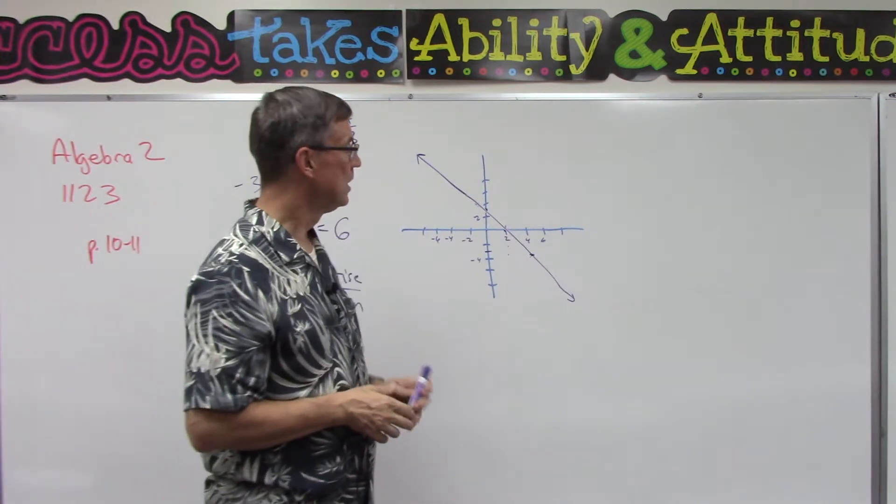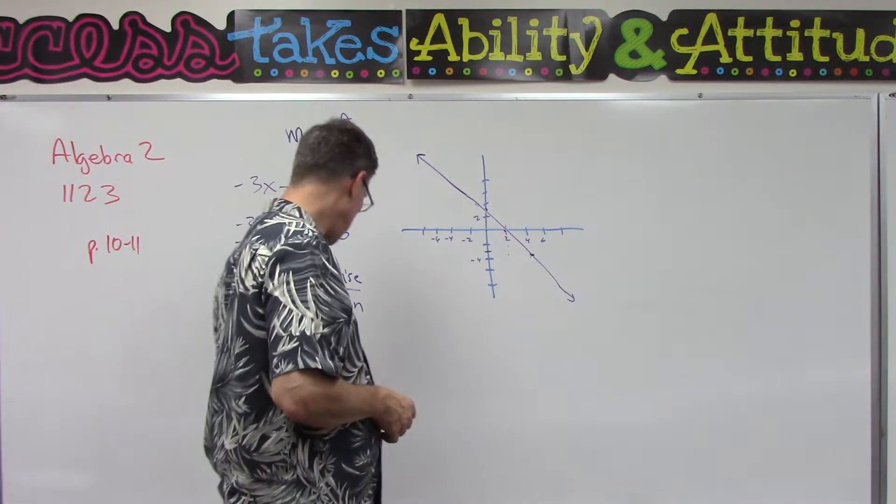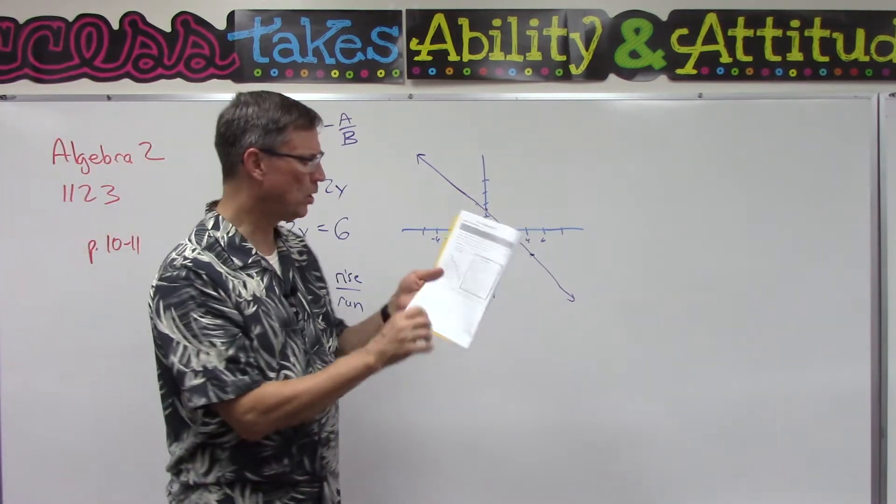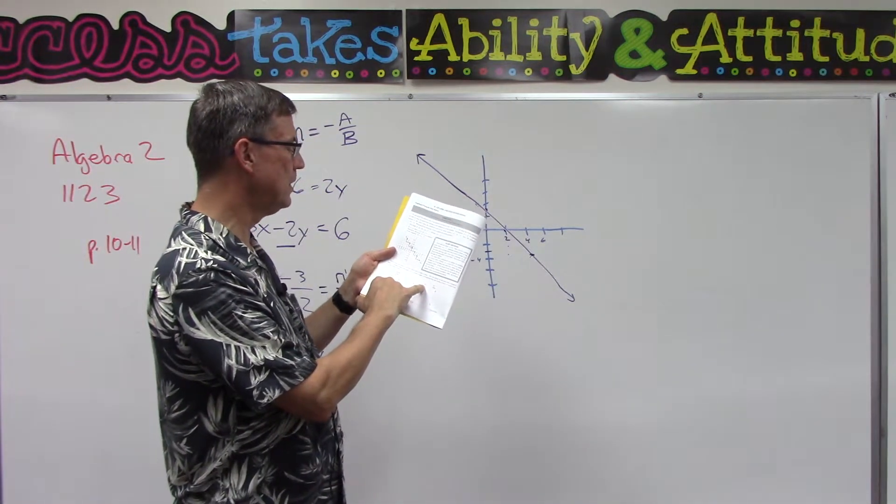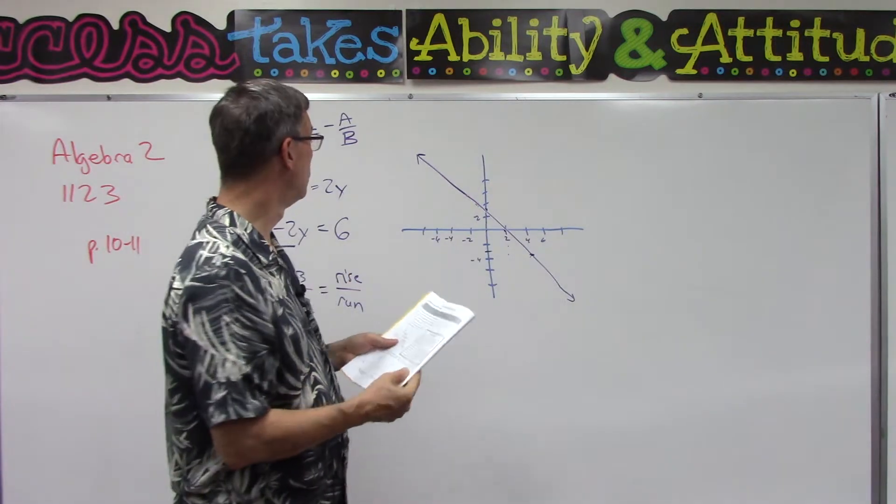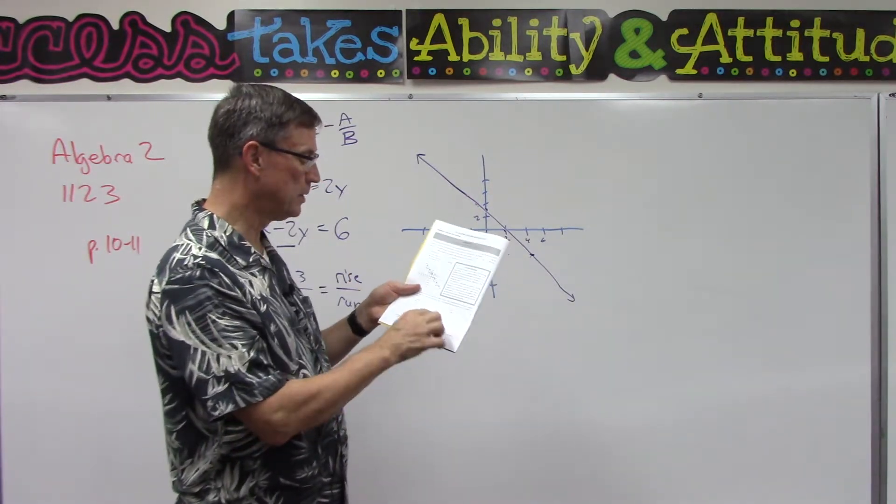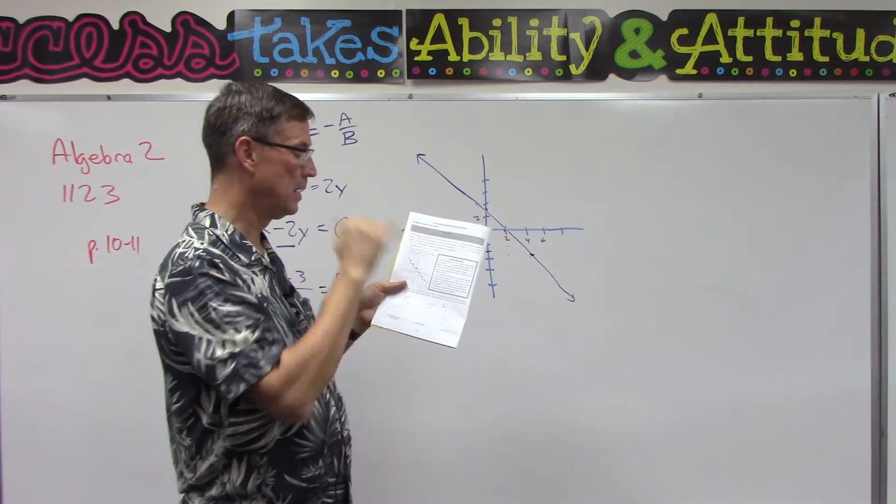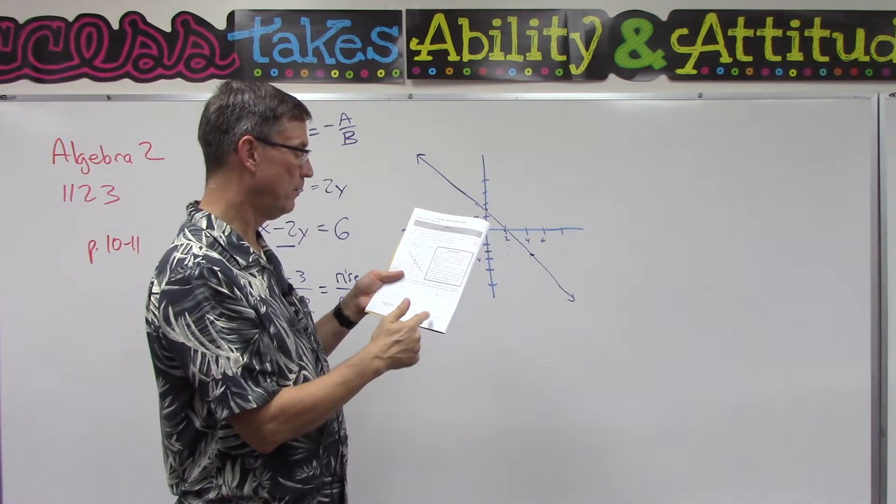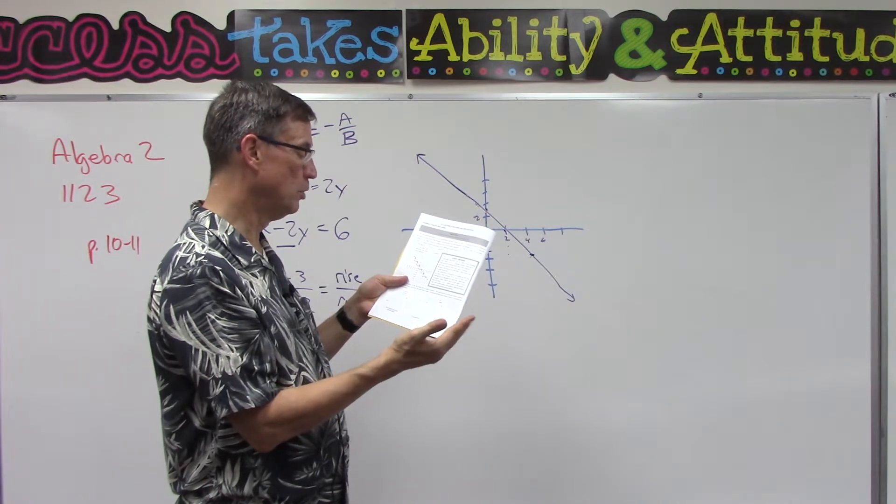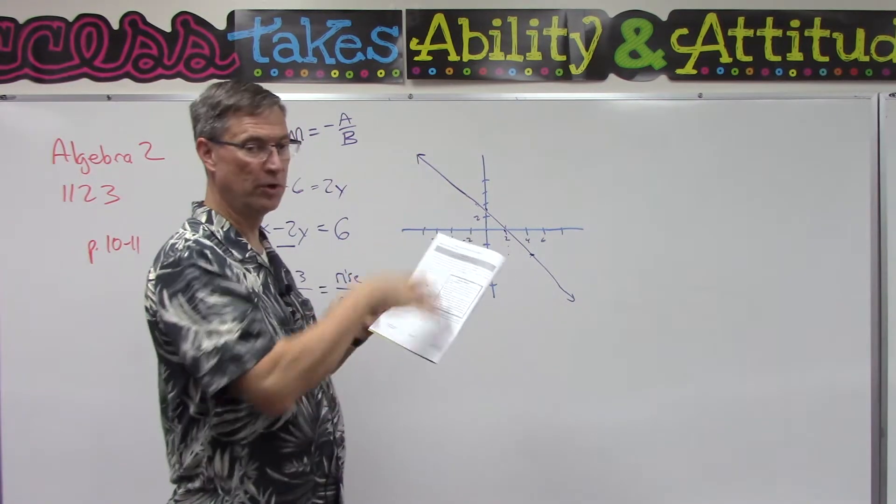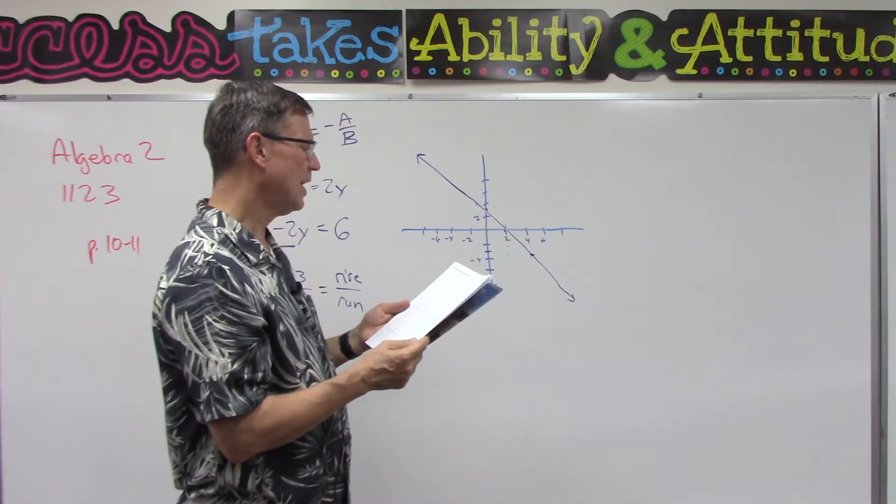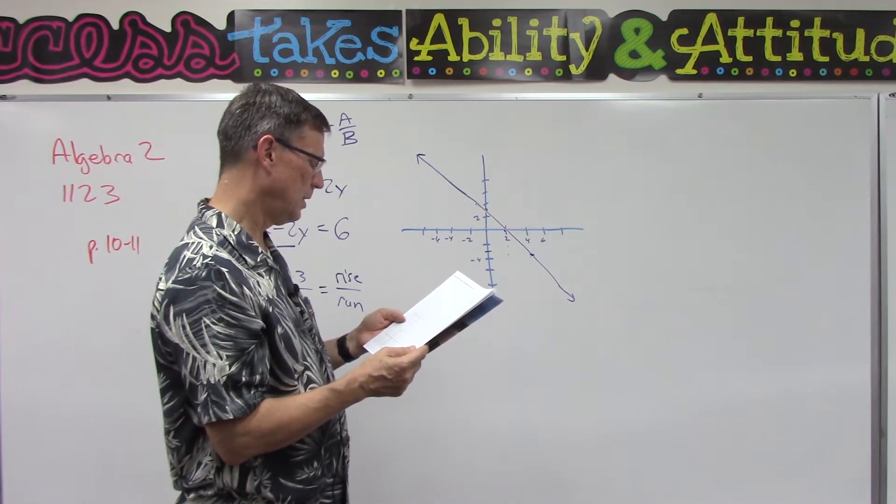At the bottom of the page, they talk about a case where maybe the slope ends up being zero. If that happens, that means it's actually a horizontal line—there's no slope, it's flat. If we end up with no slope at all, that means it's actually a vertical line. But looking at it, I'm not seeing that any of them end up that way.